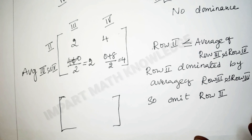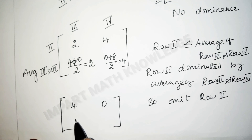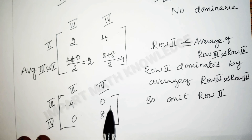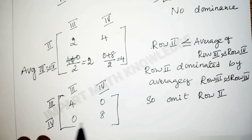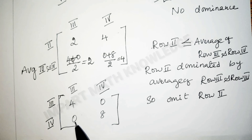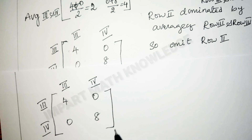The reduced matrix is now: row 3 — 4, 0; row 4 — 0, 8. Compare the first row with the second row: 4 is greater than 0, so no dominance. Check column wise: 4 is greater than 0, but 0 is less than 8 — no dominance. The reduced matrix is a 2x2 game, so we can find the optimum strategies and value of the game using the arithmetic method.